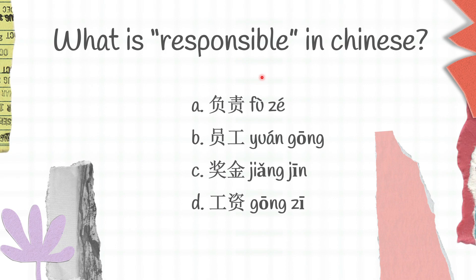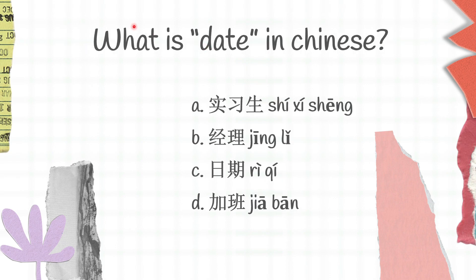The next question: what is 'date' in Chinese? We have a, shi xixi sheng; b, ying li; c, yu qi; d, xia ban.